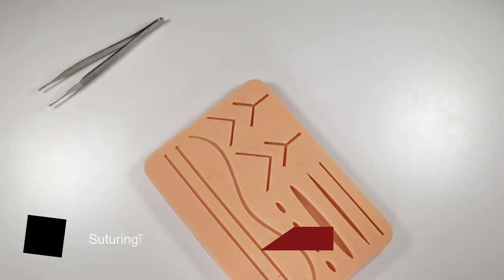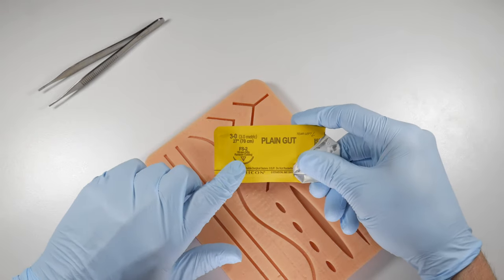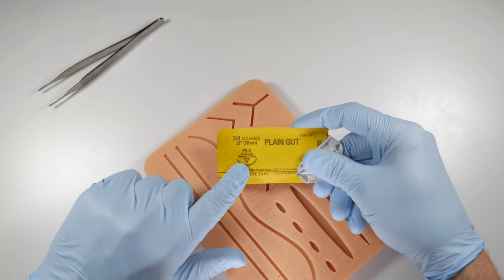Some tips now for suturing that might be very interesting for you or things that might help you would be that you want to use a reverse cutting needle. We're going to talk about this in another video, but a reverse cutting needle has a cross-section similar to what we see here.